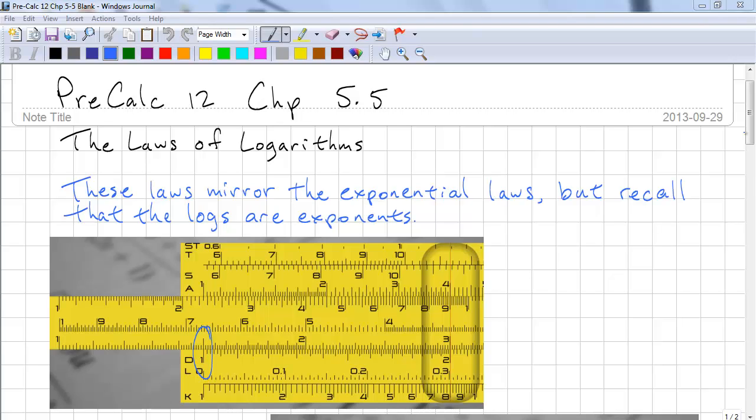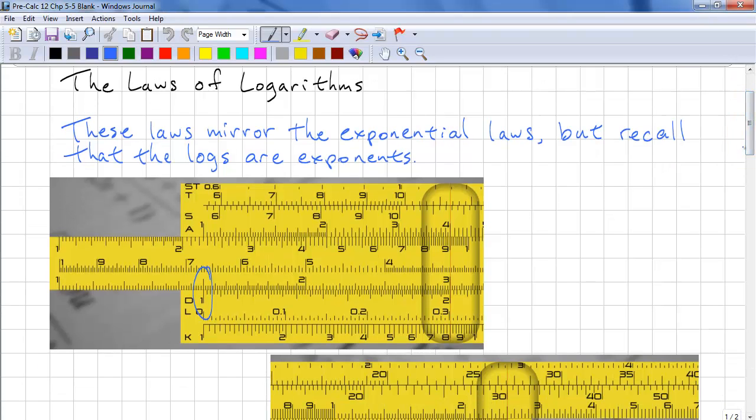These laws should not be new to you. Let's look at a slide rule. This is a physical example. Here, on this scale, we see 1.5. This is 1.5. We're reading on this scale. Here we see 2 on this scale.